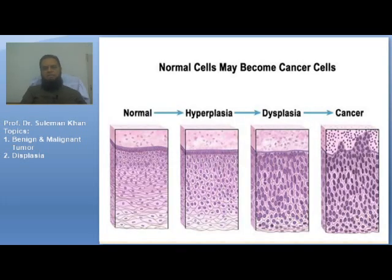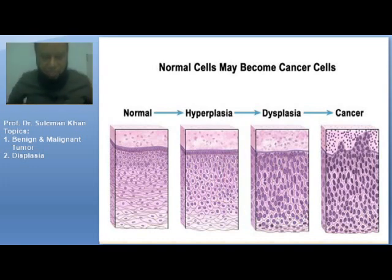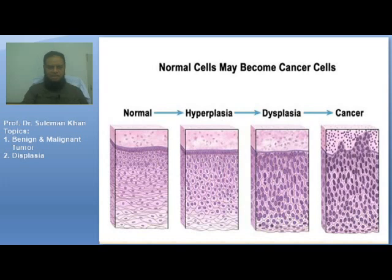Normal cells may become cancer cells. This diagram gives a good conceptual background. Look at the progression: normal tissue, then hyperplasia, then dysplasia, and then cancer. This example is shown in stratified squamous epithelium. The lining squamous cells are well maintained with a normal NC ratio in normal tissue. In hyperplasia, there is an increasing number of cells. In dysplasia, the cells have deeply staining nuclei, and these dysplastic cells are occupying much of the epithelial thickness.